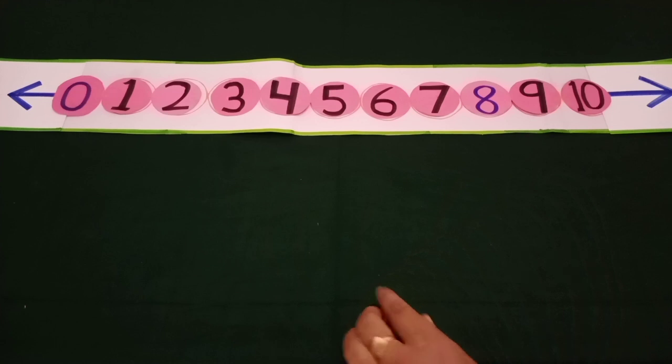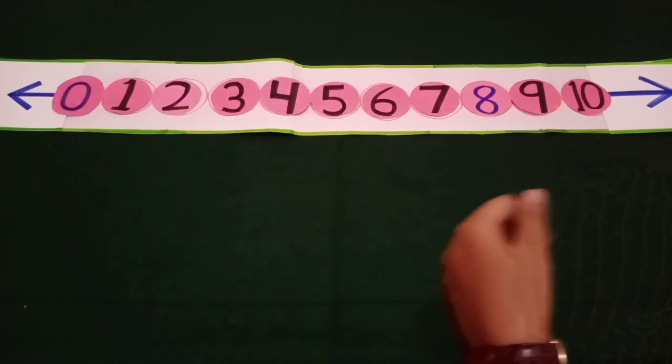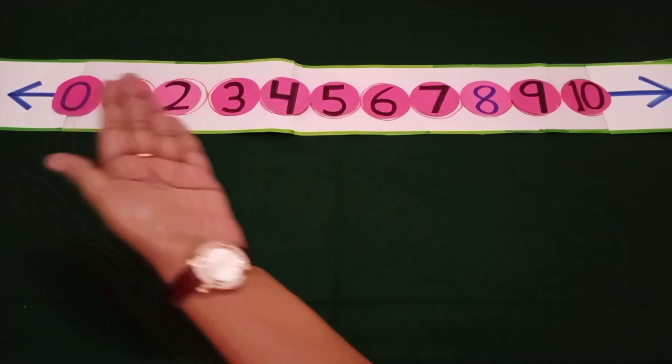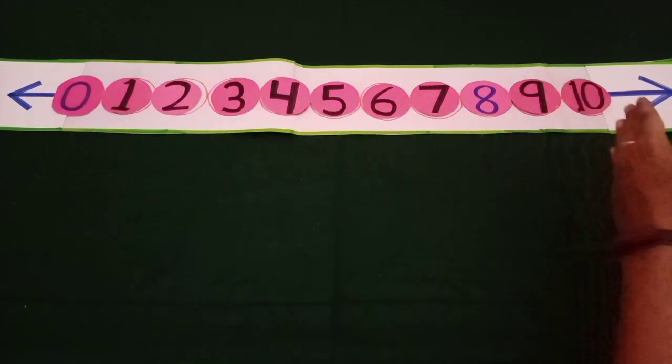A number line is a line on which numbers are written from left to right in ascending order.